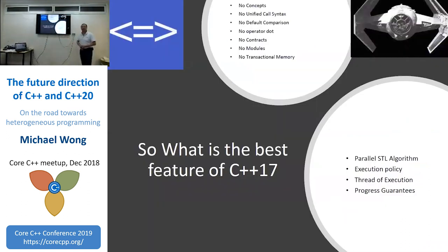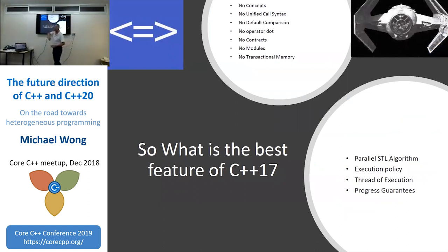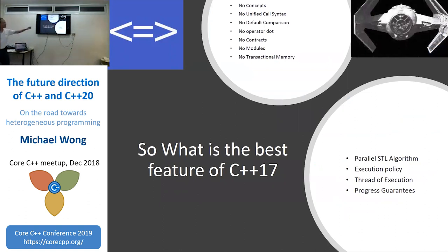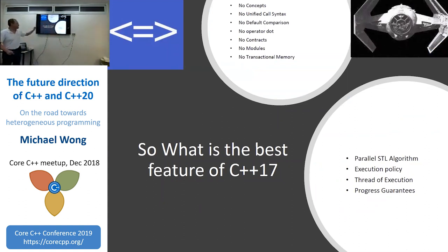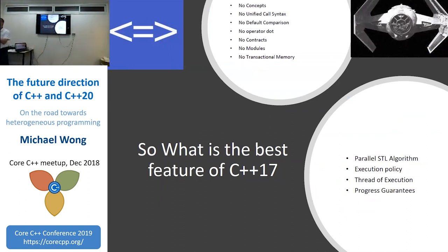To summarize what's in C++17's best features — we didn't get concepts, no unified call syntax, no default comparison (the spaceship operator). The most important things we got, for me as a parallelism expert, are parallel STL algorithms. Underneath those are execution policies, thread of execution, and progress guarantees — those are actually some of the more important foundational things.